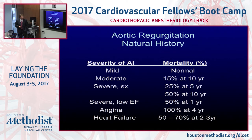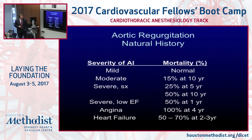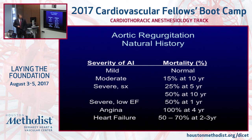The natural history: if you have mild AI you have pretty much a normal lifespan. Moderate AI carries about 15% mortality at 10 years. Severe AI with symptoms: 25% mortality at 5 years, 50% at 10 years. By the time your LV starts to fail — low EF with severe symptomatic AI — there is 50% mortality at one year. So moderate AI is relatively slow, but once it's severe and EF is dropping, life expectancy falls rapidly.